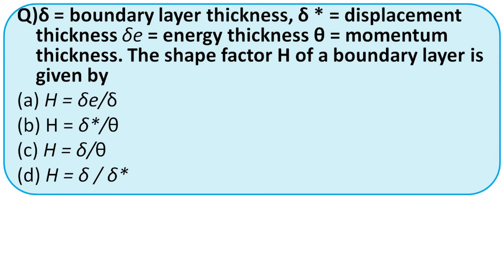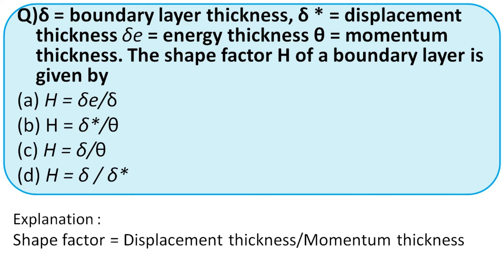The shape factor H of a boundary layer is defined as δ* (displacement thickness) divided by θ (momentum thickness). Recalling the definition, H = δ*/θ. So the right answer is option B.